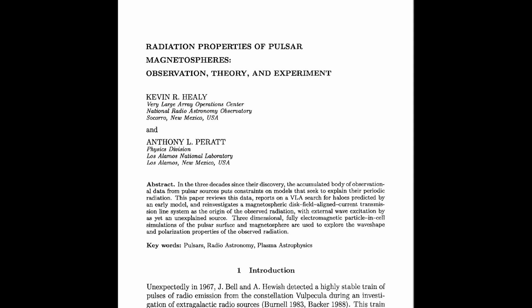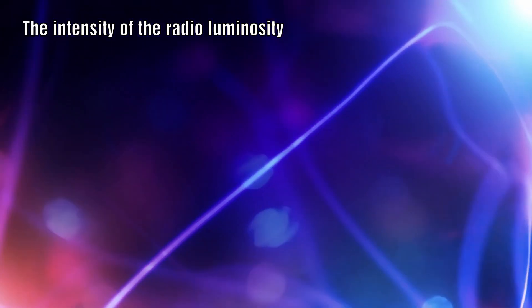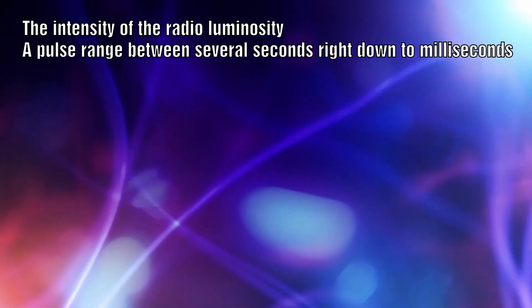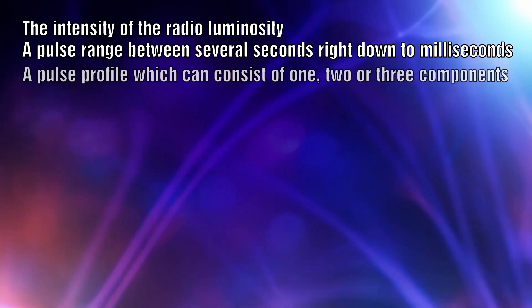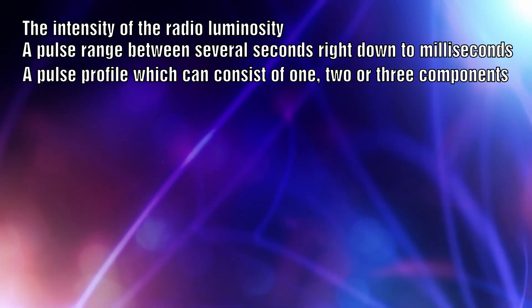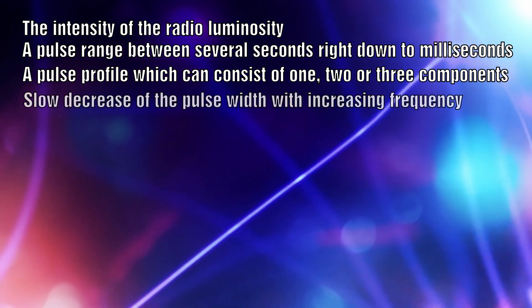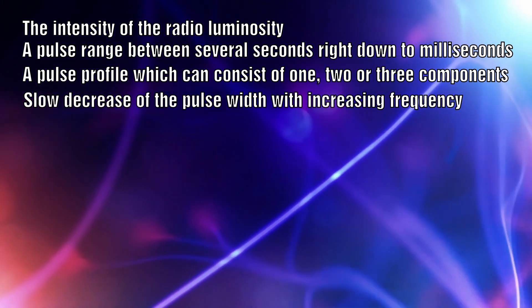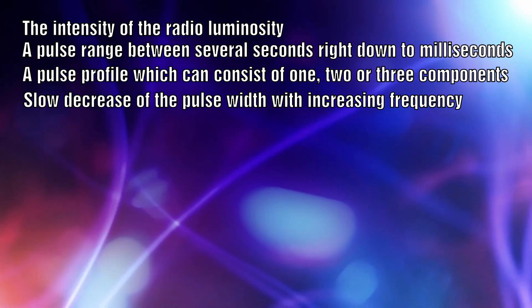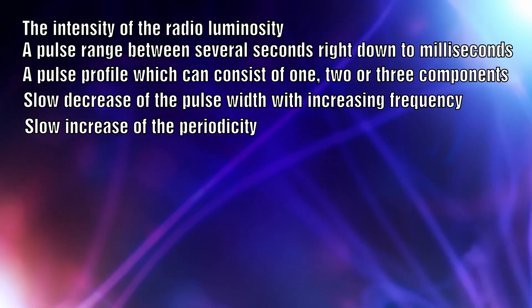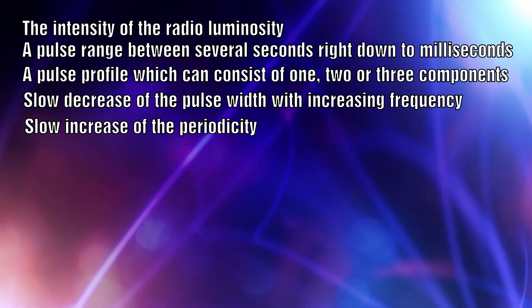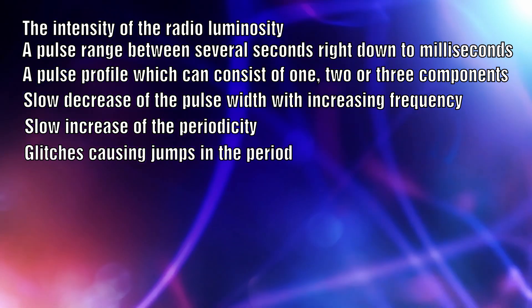They identified a series of features that pulsars have that any model must address, and these included the intensity of the radio luminosity, a pulse range width between several seconds right down to milliseconds, a pulse profile which can consist of one, two, or three components, a slow decrease of the pulse width with increasing frequency and with increasing period, a slow increase of the periodicity but a much slower increase for the millisecond pulsars, and glitches which cause jumps in the period.